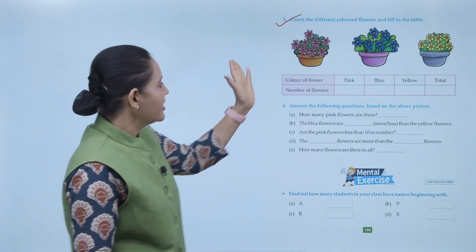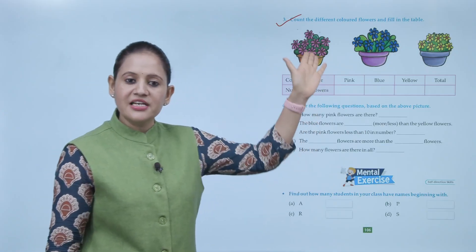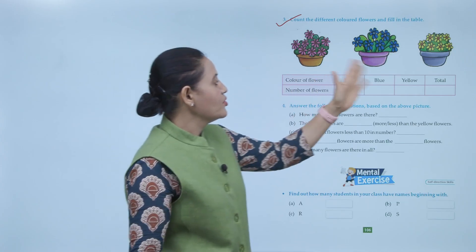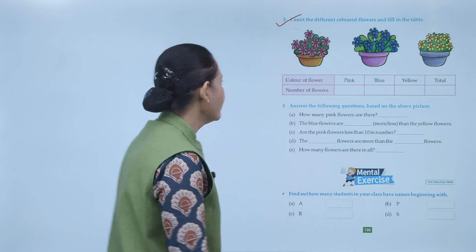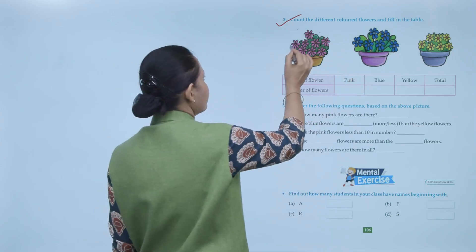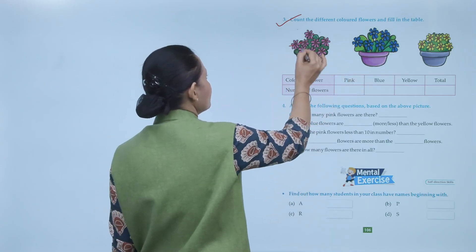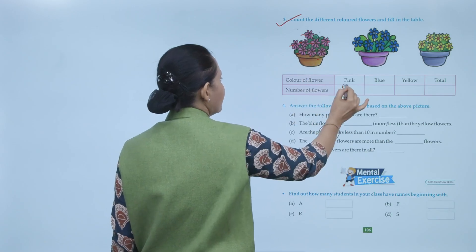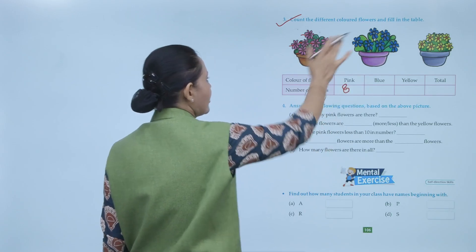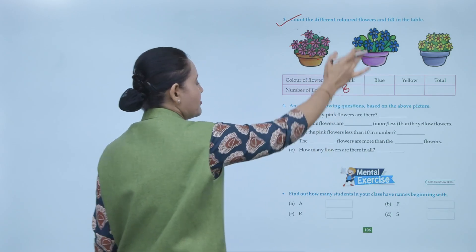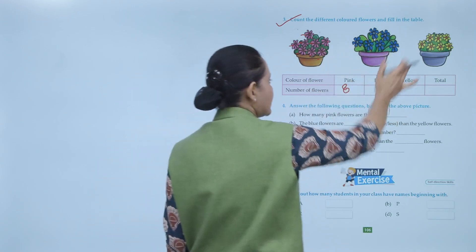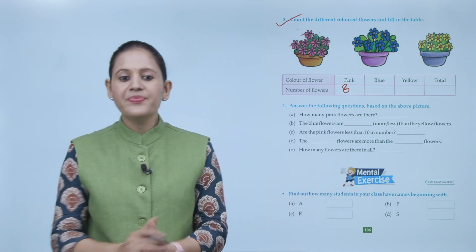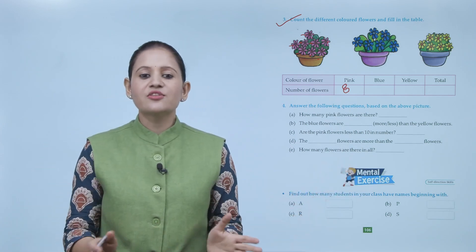The colors are pink, blue, and yellow. Number of pink flowers: 1, 2, 3, 4, 5, 6, 7, 8. Like this, you will count the number of blue flowers, yellow flowers, and find out the total number of flowers.